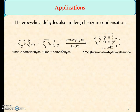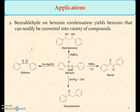This reaction is widely used in the generation of different alpha-hydroxy compounds. It is also applicable for heterocyclic aldehydes. Here we have taken the example of furan-2-carboxaldehyde, which in presence of cyanide, particularly potassium cyanide in presence of ethanol, generates 1,2-di(furan-2-yl)-2-hydroxyethanone.